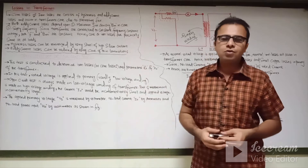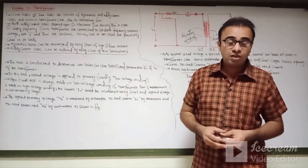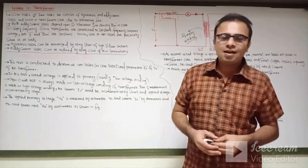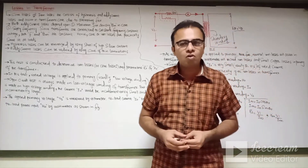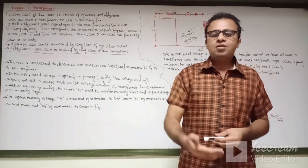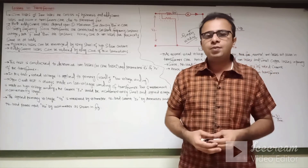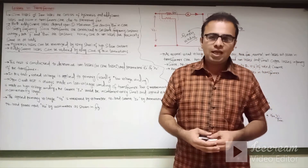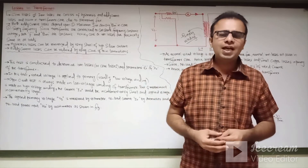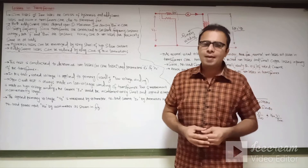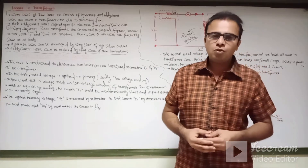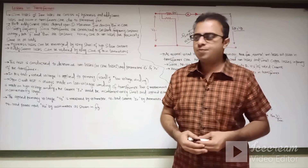Before that, we are going to briefly discuss the losses in the transformer. There are two types of losses: the core losses and the copper losses, which are produced in the transformer. When the primary winding is energized from the main AC supply, the core is magnetized because of the magnetizing current and MMF produced in the primary winding.